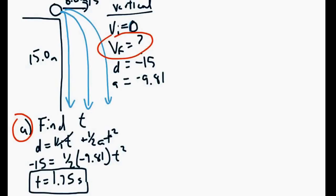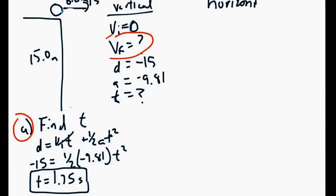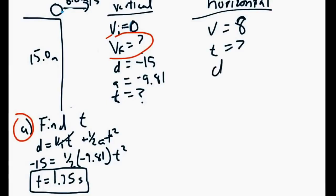Let's do an example. Suppose we're going 8 meters per second off the cliff and we're falling 15 meters — so the height of the cliff is 15 meters. We separate the information: vertically, we have an initial velocity of zero, a distance of negative 15 meters, and an acceleration due to gravity of 9.81 downwards. We don't know the final velocity or the time. Horizontally, we know the constant velocity is 8 meters per second, and we don't know the time or how far it will travel.